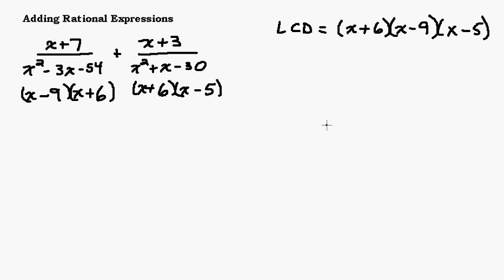Now in order to create this least common denominator we need to multiply the top and bottom of each fraction by the factor that it's missing from the least common denominator. The first fraction is missing the x minus 5, so I'm going to multiply the top by x minus 5 and the bottom by x minus 5. On this one we're missing the x minus 9, so I'm going to multiply the top by x minus 9 and the bottom by x minus 9. That's going to give me my least common denominator.